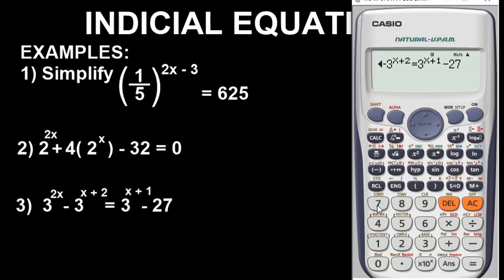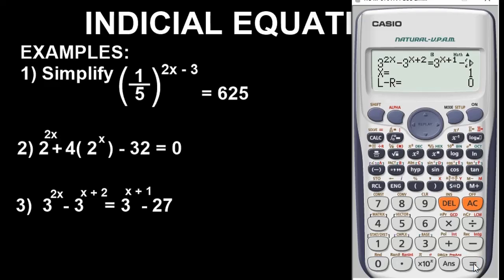To get the answer, press Shift Calc and assign x to be the neutral number 0. Press 0 and then press the equals key — your answer will display. The answer is 1. When x is assigned a neutral number, the unknown variable here is 1. Very, very simple.